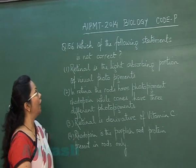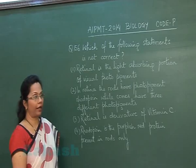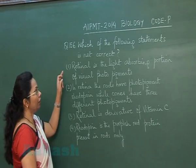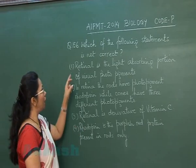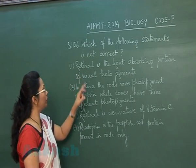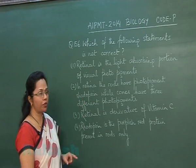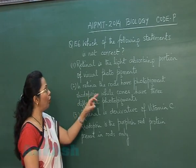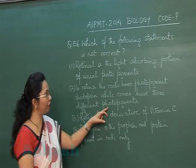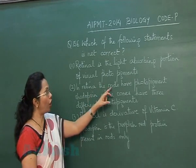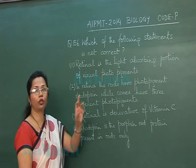Question 156: Which of the following statements is not correct? Retinal is the light-absorbing portion of the visual photopigments — this is a correct statement. In the retina, rods have the photopigment rhodopsin while cones have three different photopigments. This is also a correct statement because rods have rhodopsin but cones have three different pigments.